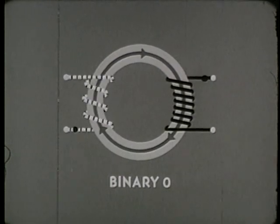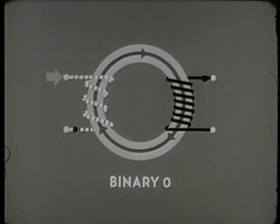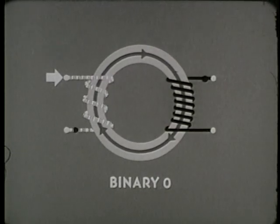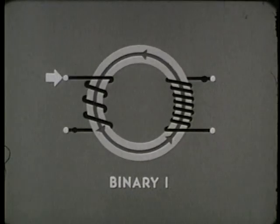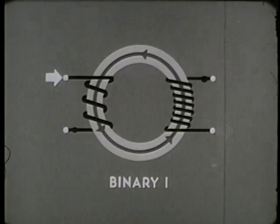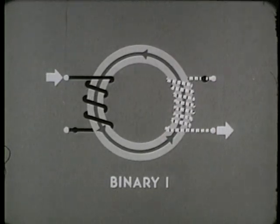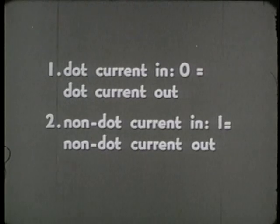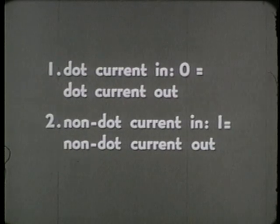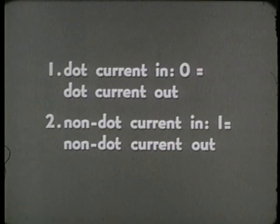When dot current moves into the input winding, it causes current to move out the dot side of the output winding, provided the input current produces a change in flux. For example, if the core is already set at binary zero, a second pulse of dot current will have no practical effect — there is no change in flux, and therefore no output current. However, if we send current into the non-dot side of the input winding, the direction of flux in the core is reversed, switching it to binary one, and produces a current that flows out of the non-dot side of the output winding. A non-dot current input results in a non-dot current output.